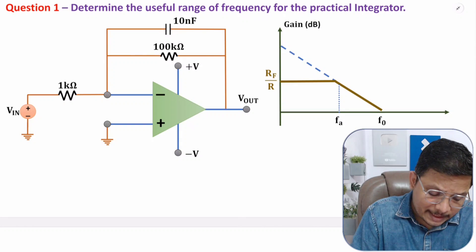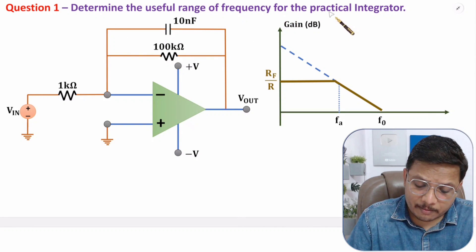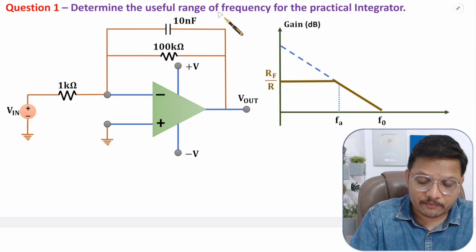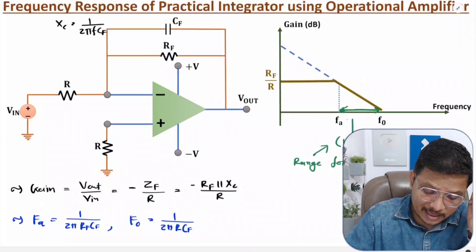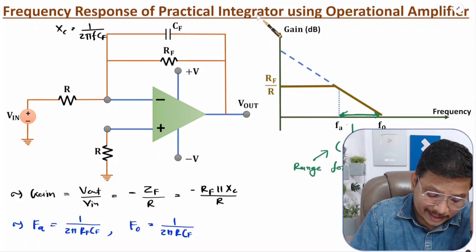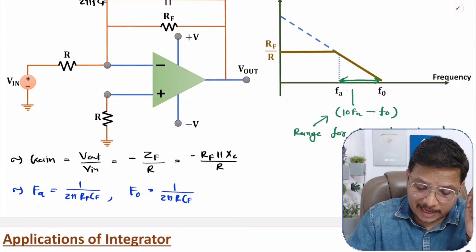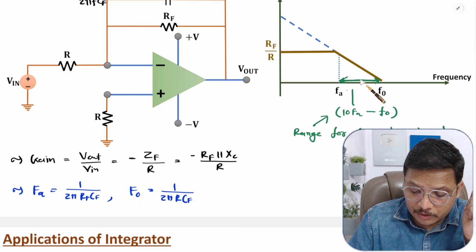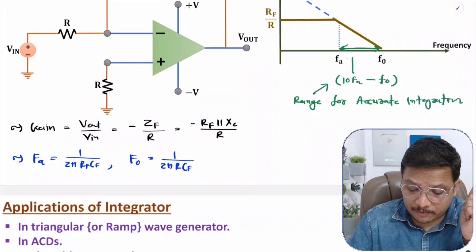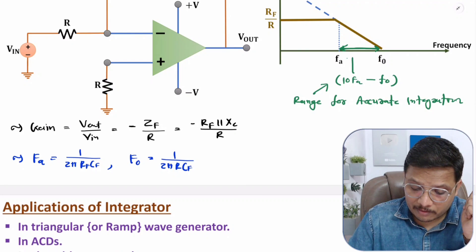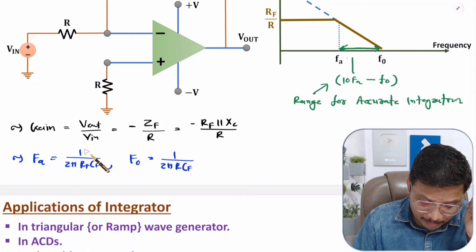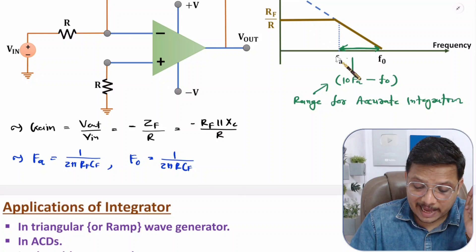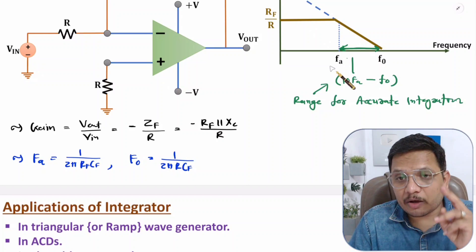In the first question, we need to determine the useful range of frequency for a practical integrator. This is the practical integrator circuit for which we need to determine the useful range of frequency. From my last video, I explained the frequency response of the practical integrator, and the useful range of frequency happens from 10Fa to F0, where Fa is calculated as 1/(2π·Rf·Cf) and F0 is calculated as 1/(2π·R·Cf).